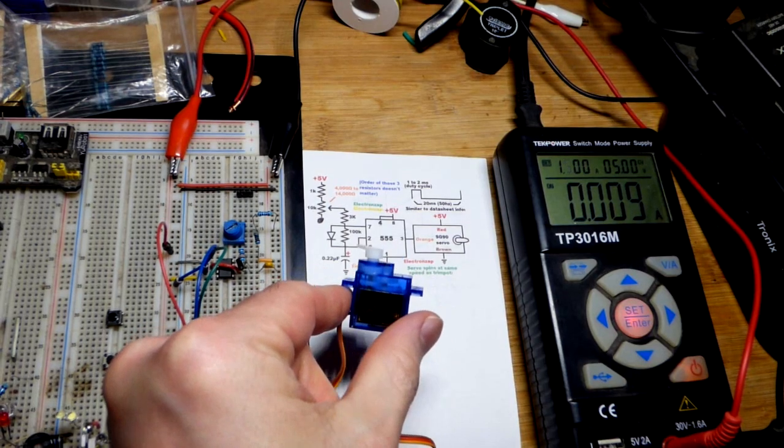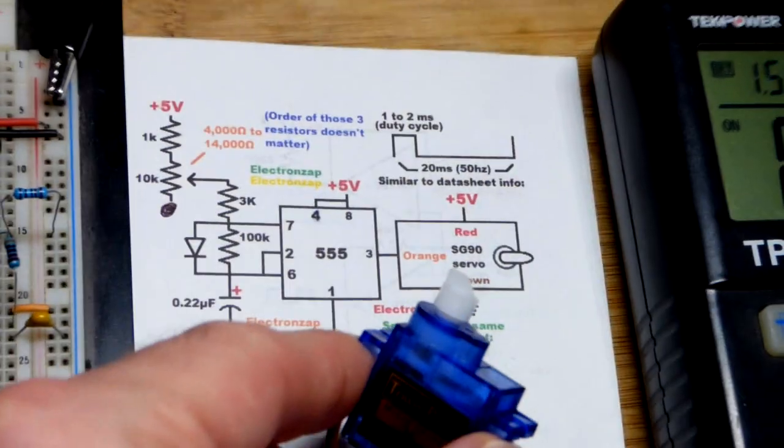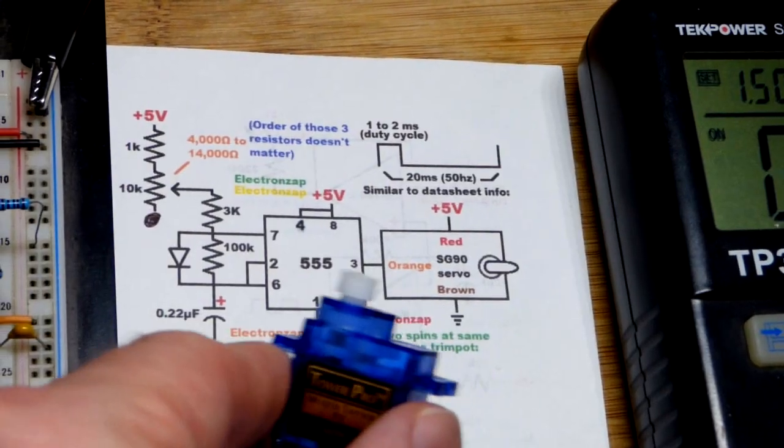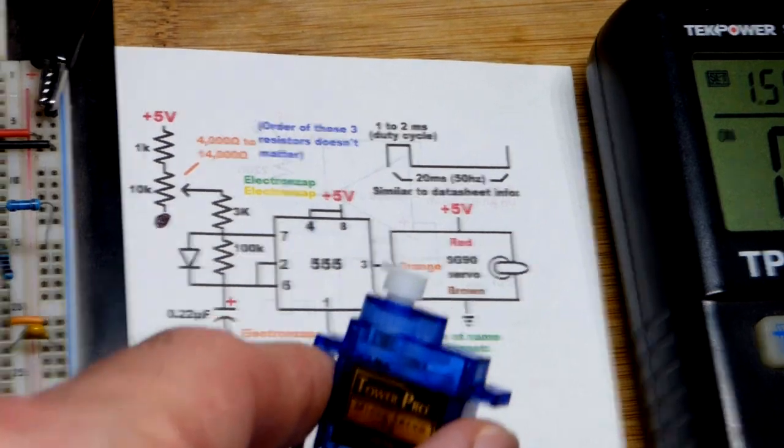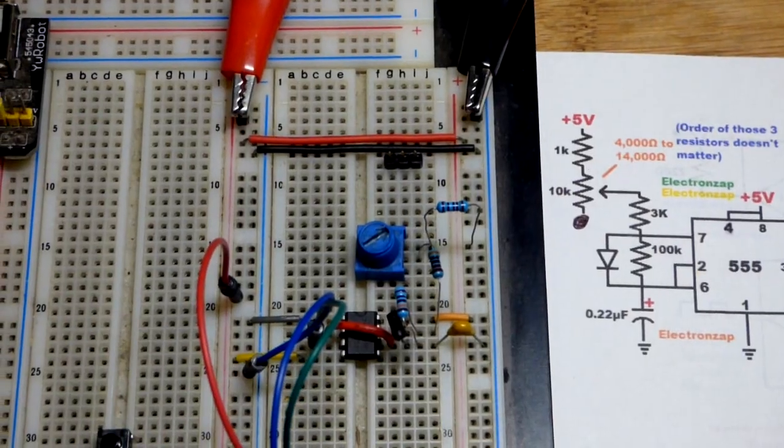Now when it comes to the servo - we'll zoom in right there - you power the servo with whatever power supply you're using. You're just getting a signal from whatever gives you the signal to control it. In this case it's a 555 timer that we can adjust with a trim pot.